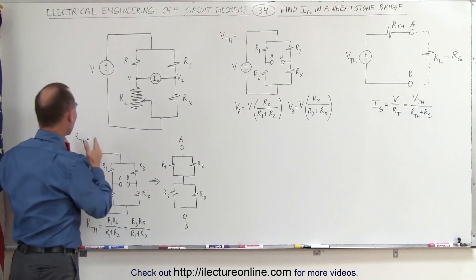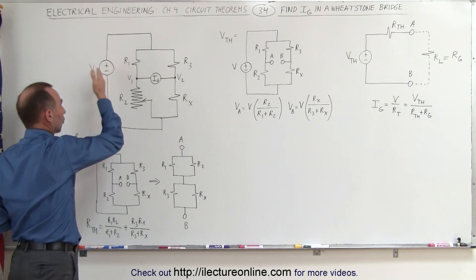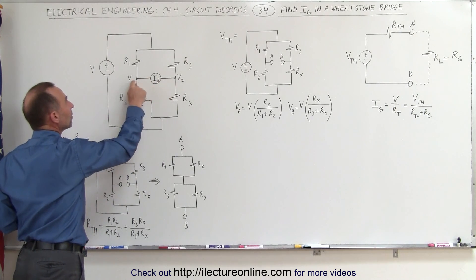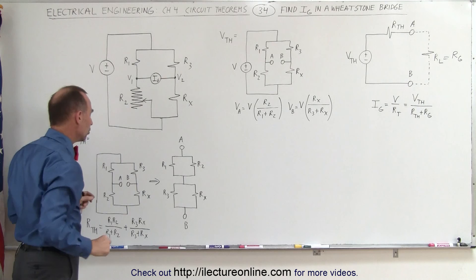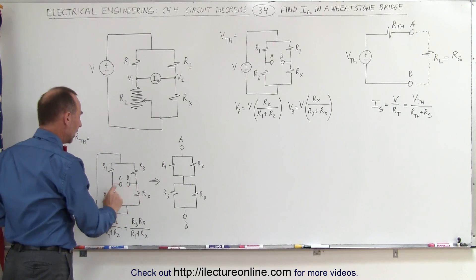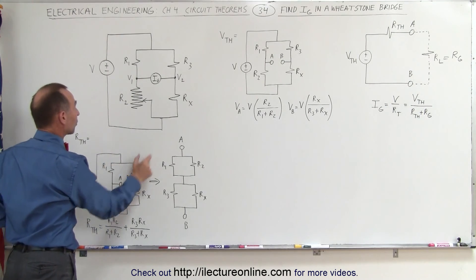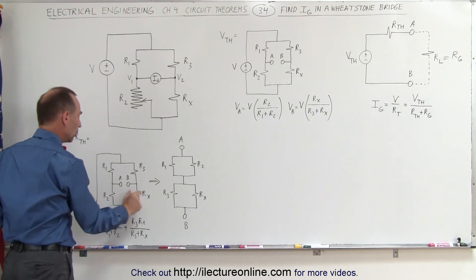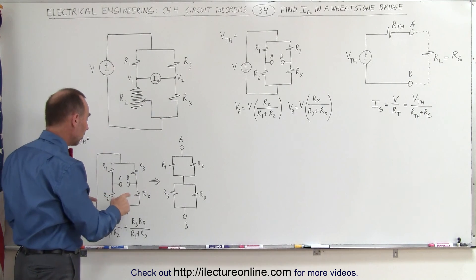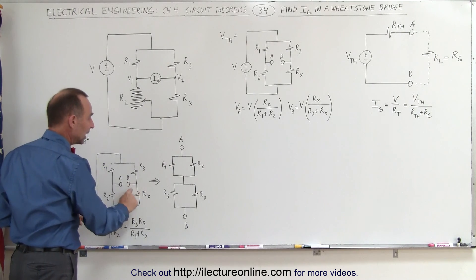The Thevenin resistance can be found by removing the voltage source — or setting the voltage source equal to zero — and then opening the circuit between A and B, between point V1 and point V2. We then find the resistance across this gap. Notice that if I take this circuit, which has resistance R1 and R3, and R2 and Rx, we can find the equivalent resistance by redrawing the circuit starting from A and terminating at B.